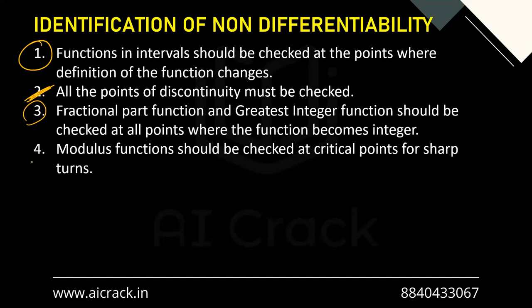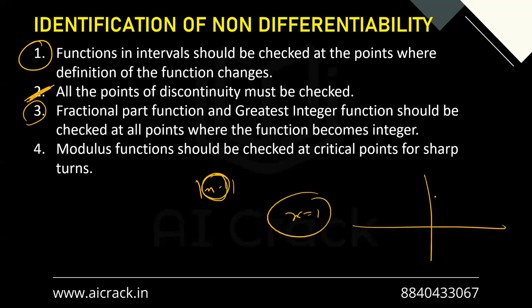The fourth and newer point specifically for differentiability: modulus functions should be checked at critical points for sharp turns. For example, |x - 1|: this becomes zero at x = 1, so x = 1 is the critical point where the function has a sharp edge and turns slopes. So we must check all such points when dealing with modulus functions.